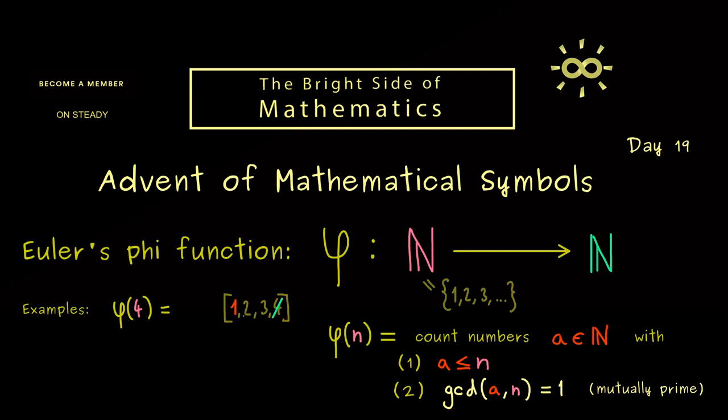Then in the next step, we have to exclude 2 because 2 times 2 is 4. Okay, then looking at 3, we see there is no common divisor greater than 1. And now you see when we count the numbers that remain that fulfill both properties, we get out 2. Hence, φ(4) = 2.